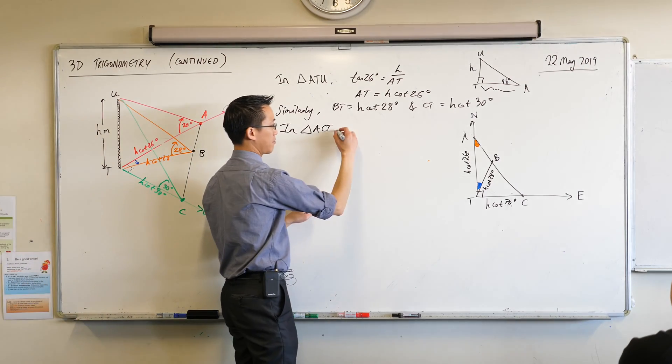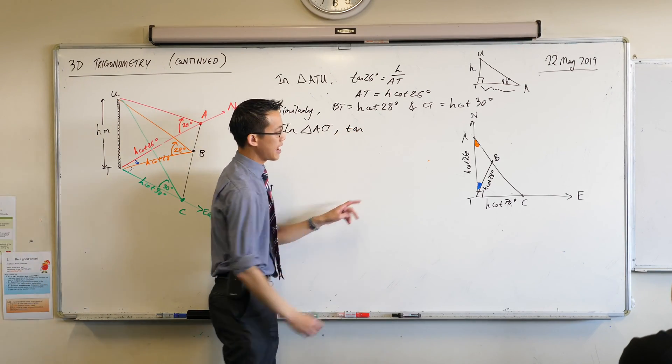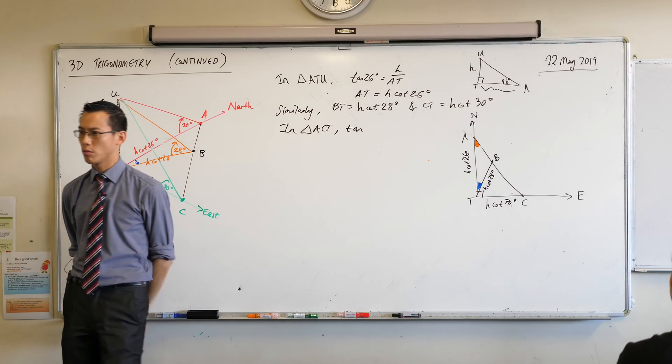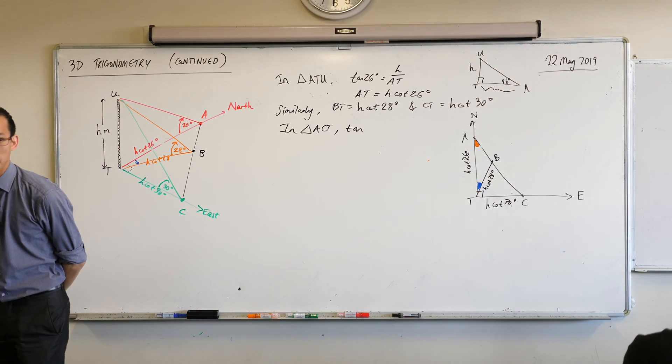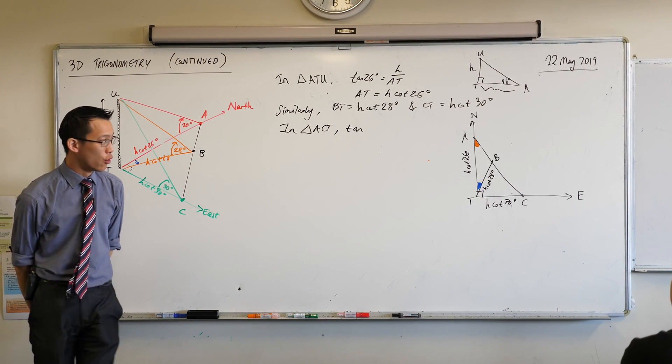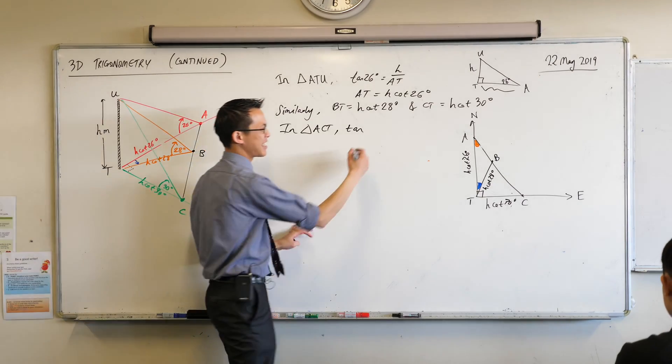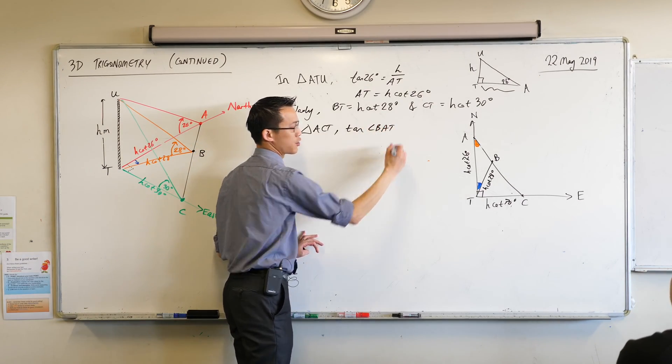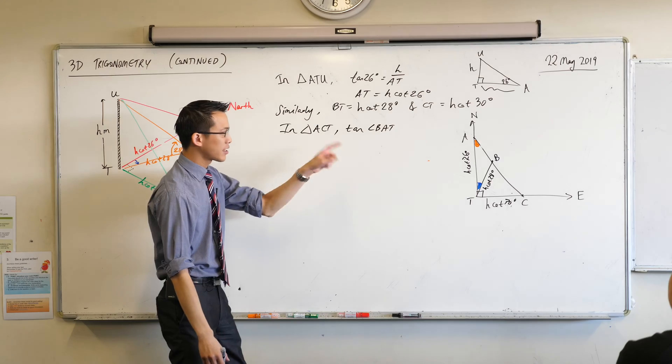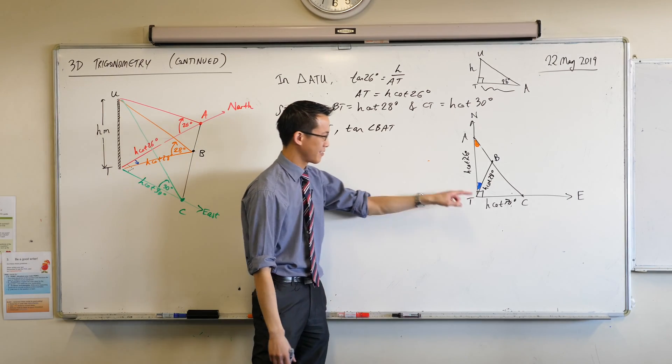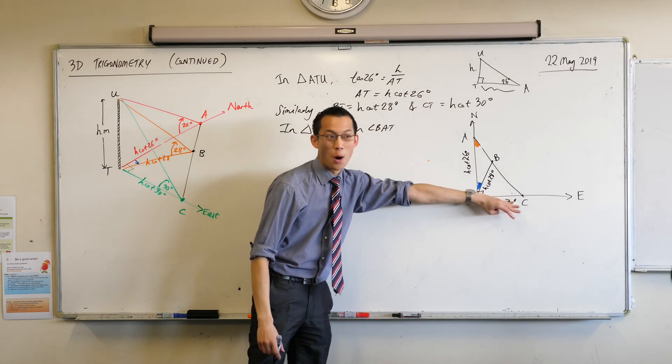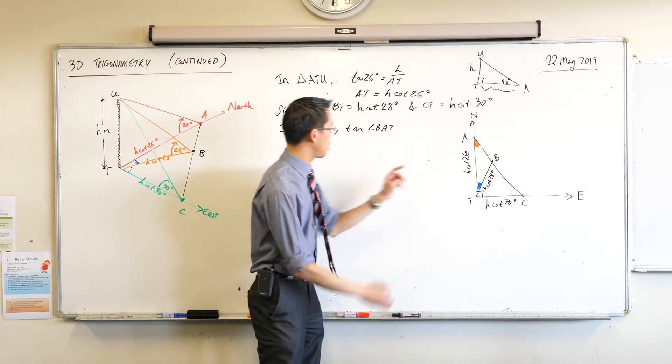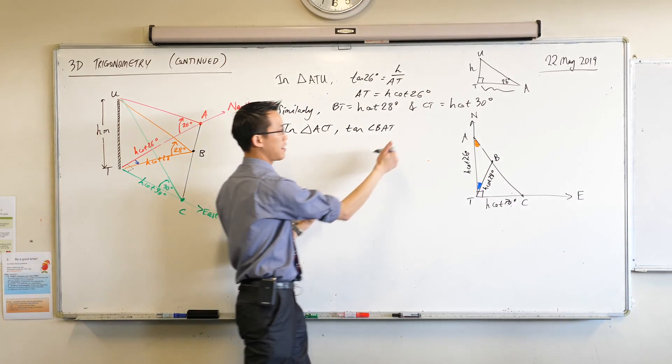Ramson suggested I use tan. Tan of that angle up there, the orange one, what's it called? What's its name? T-A-B or C-A-T or B-A-T. I'm going to call it B-A-T. That's the triangle I'm after in the end. It's going to be opposite on adjacent in this big triangle. You okay with that?